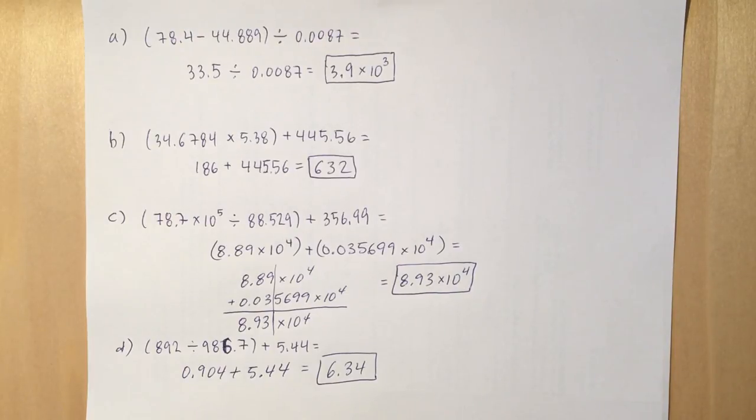What I would recommend you do now is convert the 356.99 to 10 to the fourth as well, which is what I've done.